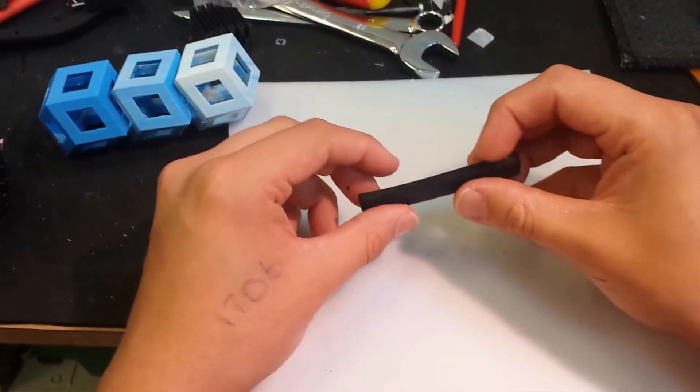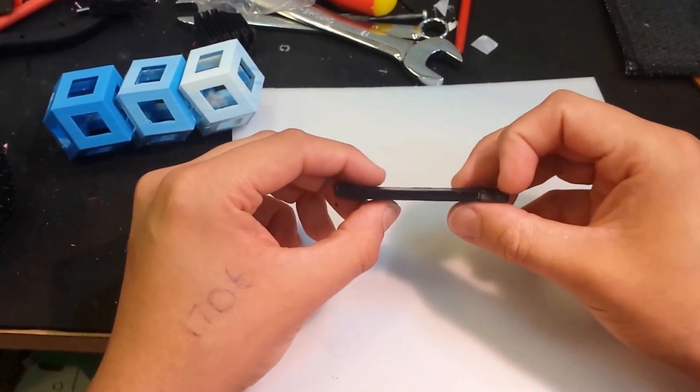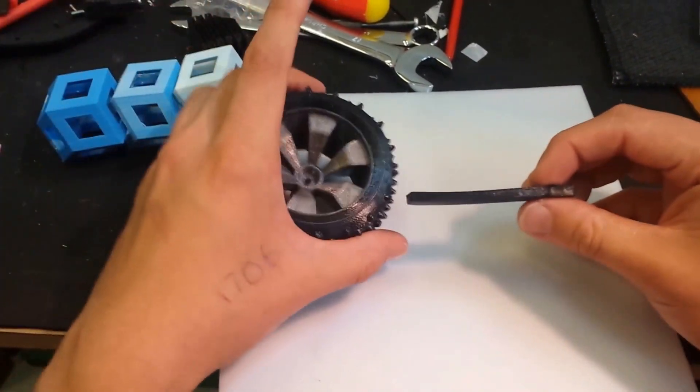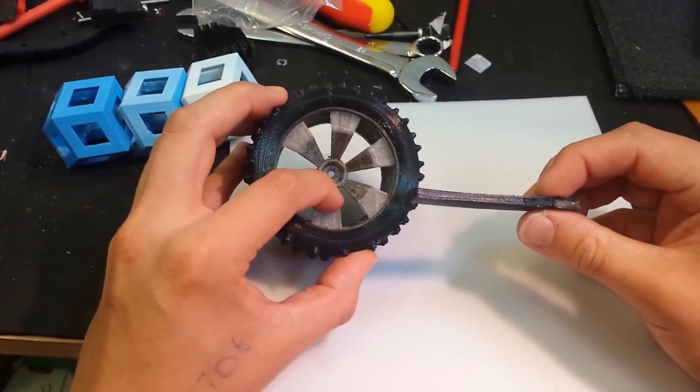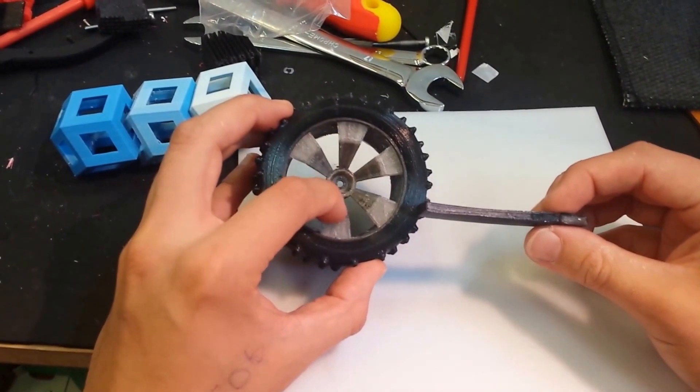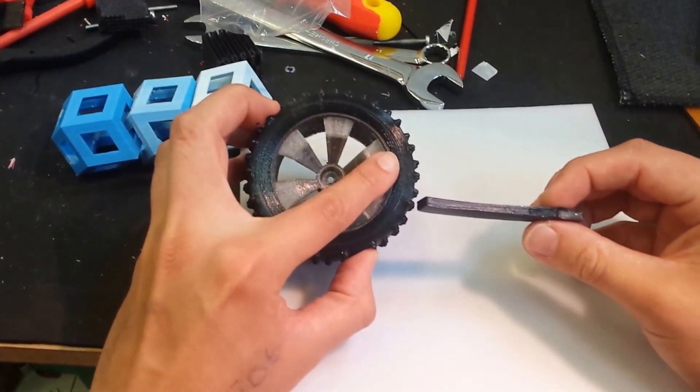And this last one is really interesting to me. It doesn't look like much, but we've again used the same two materials, a rigid copolyester, that's E3D Premium PET, and a flexible copolyester, that's our E3D Flex 65, I believe.